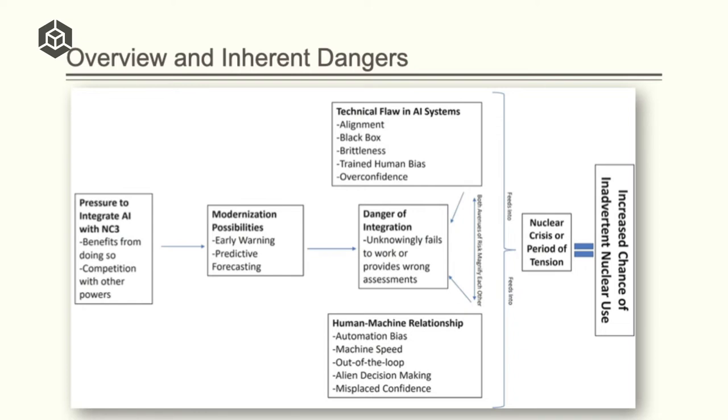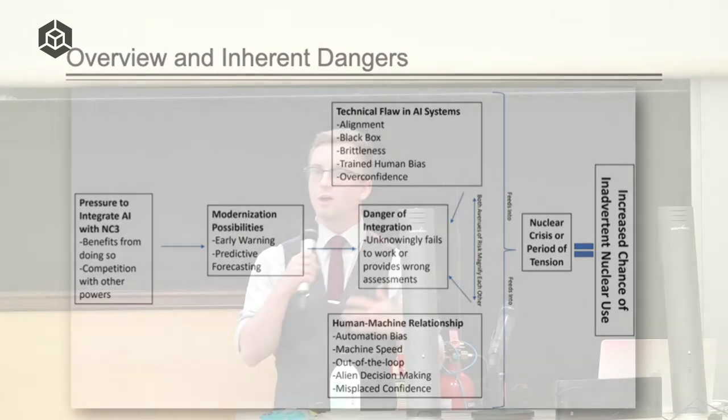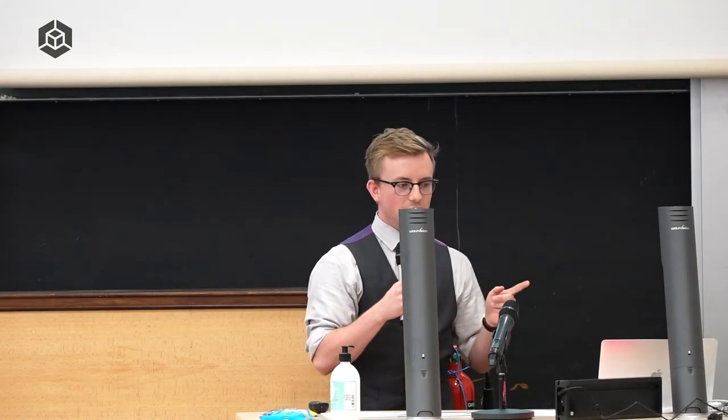And I'm specifically focusing on inadvertent nuclear use. And again, as Vara said, this is sort of mistaken use, not an accident, but you purposefully choosing to launch your weapons in response to usually a false alarm. And one last thing before I go on is that nuclear risk already exists. The artificial intelligence integration isn't creating exactly a new problem. It's just potentially pushing us over the threshold into use.